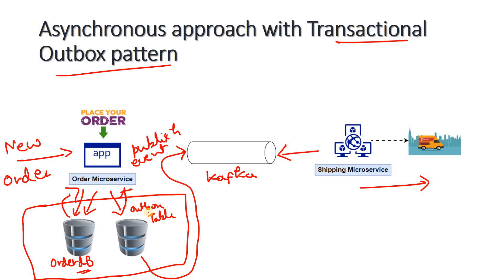Using a CDC tool like Debezium connector or a trigger, events from the Outbox Table are published to the Kafka cluster. We keep a separate Outbox Table rather than adding CDC directly on the Order Table, to avoid overburdening a single table with both order management and CDC responsibilities. This separation keeps the architecture clean and the dual write problem is fully avoided.